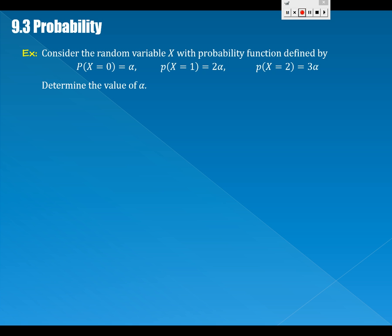Let's start with this simple problem. Consider the random variable X with probability function defined by P(X=0)=α, P(X=1)=2α, P(X=2)=3α. Determine the value of α. What demand must we place on these three probabilities? What demand would you place on these if this really does represent the exhaustive list of all outcomes and this is truly a probability distribution?